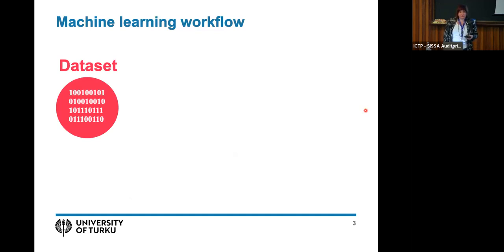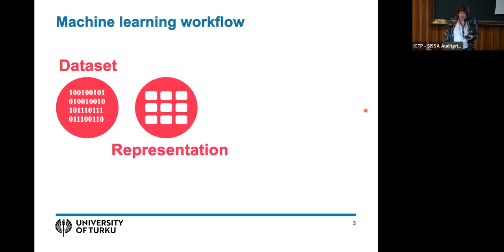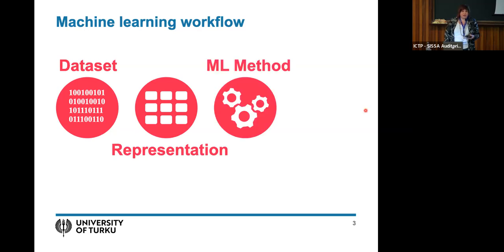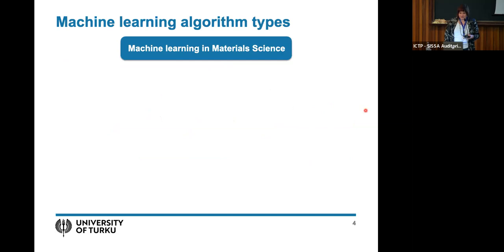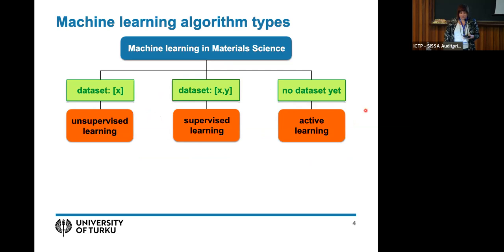All machine learning workflows start with a dataset. Many of you already have your own datasets, and the next step is to implement them into some kind of representation — encoding them in a structure that represents them to the machine learning method. Anton reviewed quite a few representations this morning. Now we get to the machine learning method itself, which is the topic of this tutorial. We'll also cover some neural networks tomorrow, but today we focus on kernel methods.